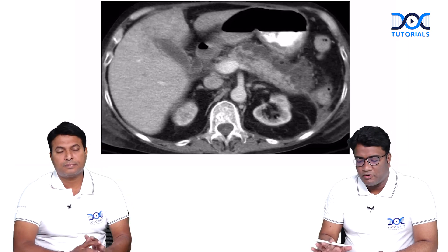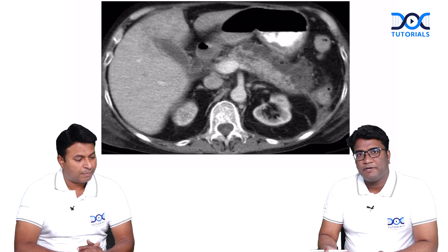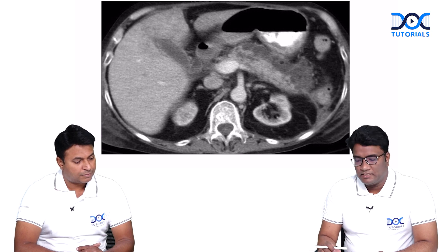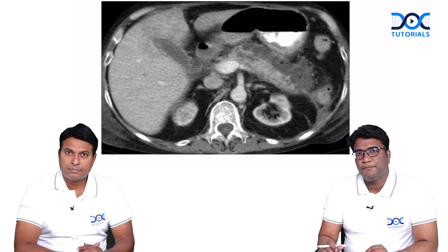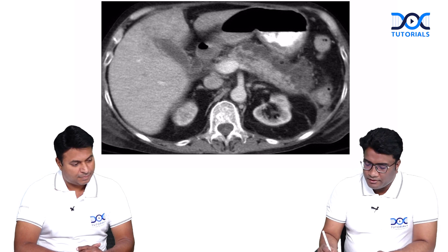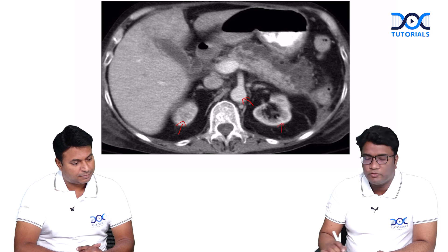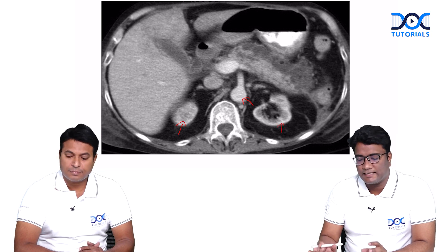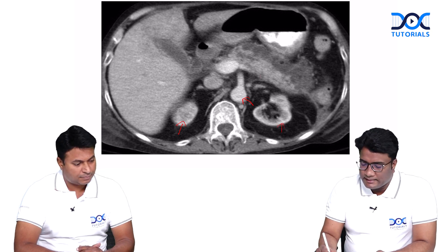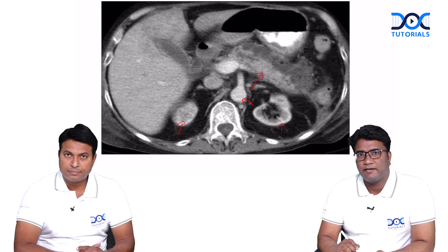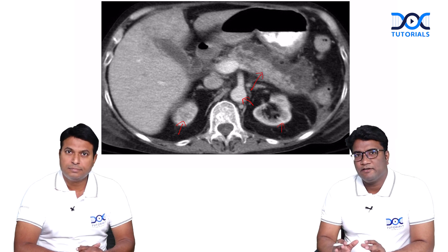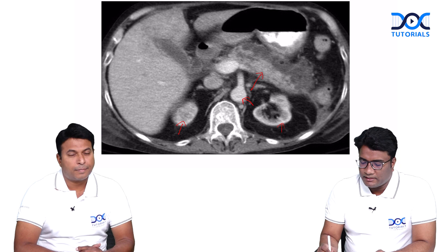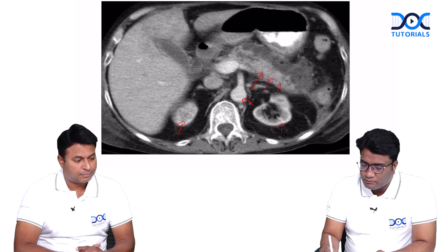This is the contrast-enhanced CT scan image obtained on the fourth day of admission. If you look at the image carefully, this is a contrast CT — you can see the contrast in the aorta, the enhancement of the kidneys. So you know this is a contrast-enhanced CT scan and an axial image is shown. This area here is the region of the pancreas. Look at the pancreas carefully — you see there are some nicely enhancing areas, but at the same time you also see some non-enhancing areas in the pancreas.